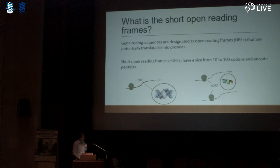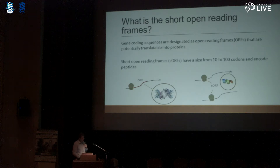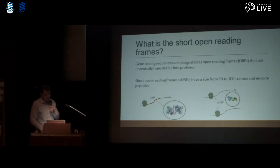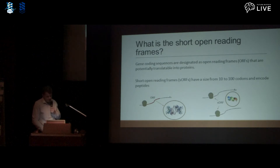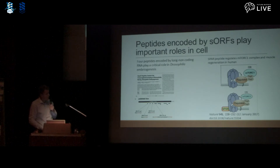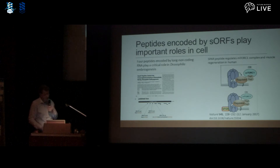What are small open reading frames? What is the difference between open reading frames which are translatable into proteins and short open reading frames? Short open reading frames have a size from 10 to 100 codons and encode peptides. Gene annotation algorithms are not suited for dealing with short open reading frames, and they are generally arbitrarily excluded from protein annotation. The functions of sORF-encoded peptides are generally unknown, but recent works have shown that they play fundamental roles in a diverse range of cellular processes — a hidden regulatory level in the cell.